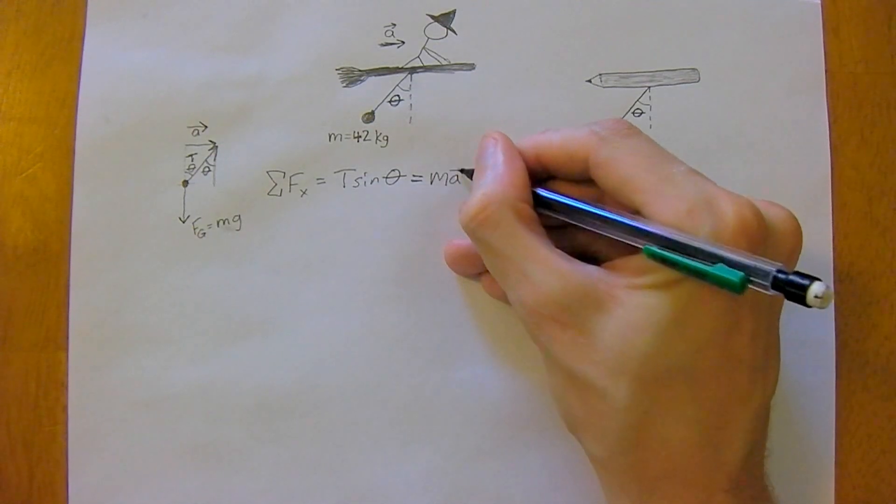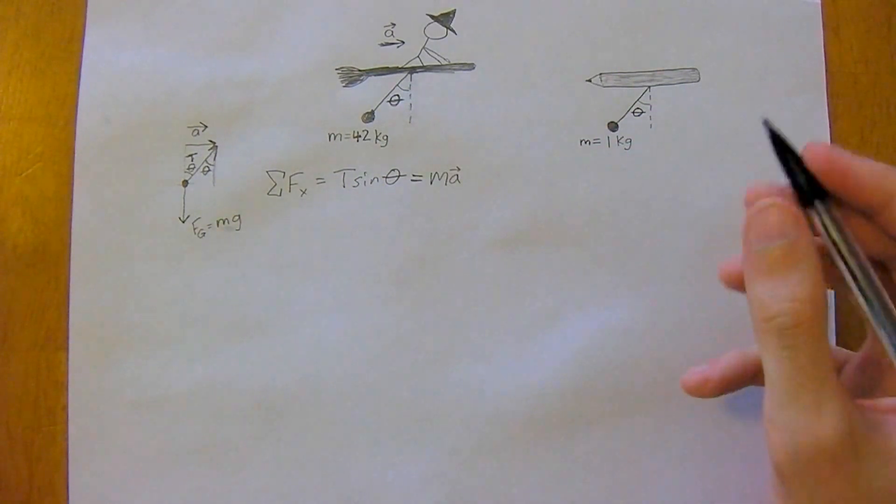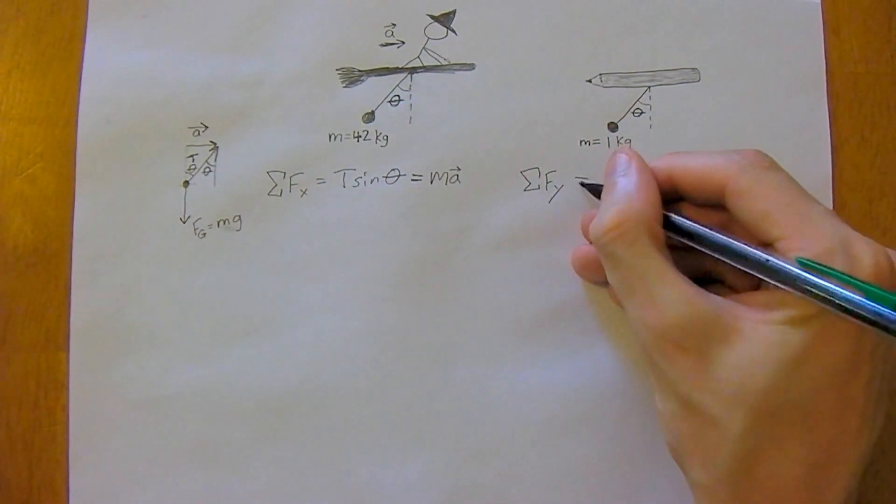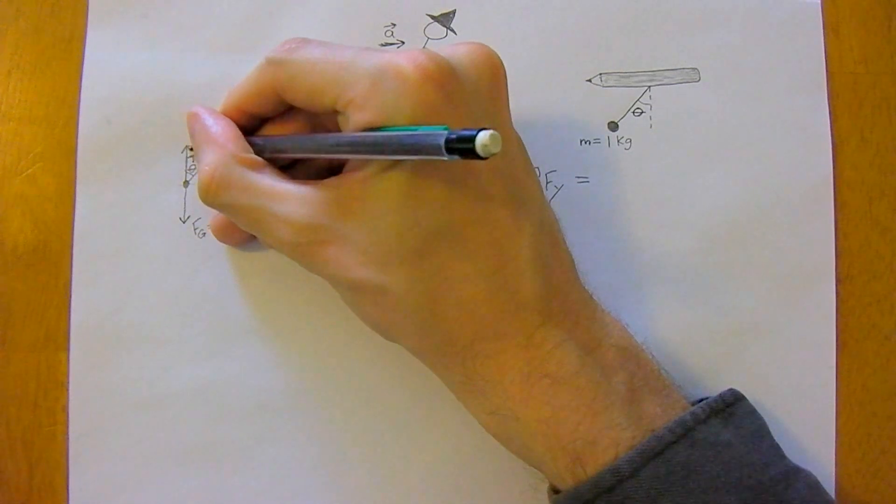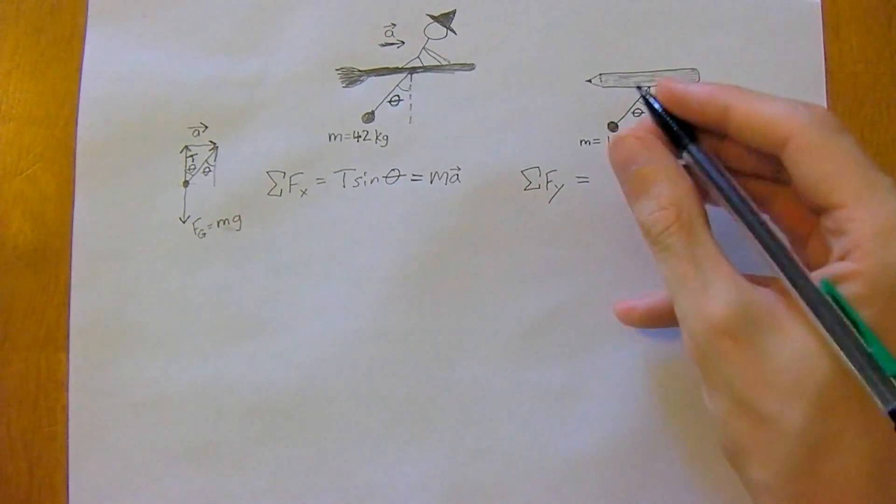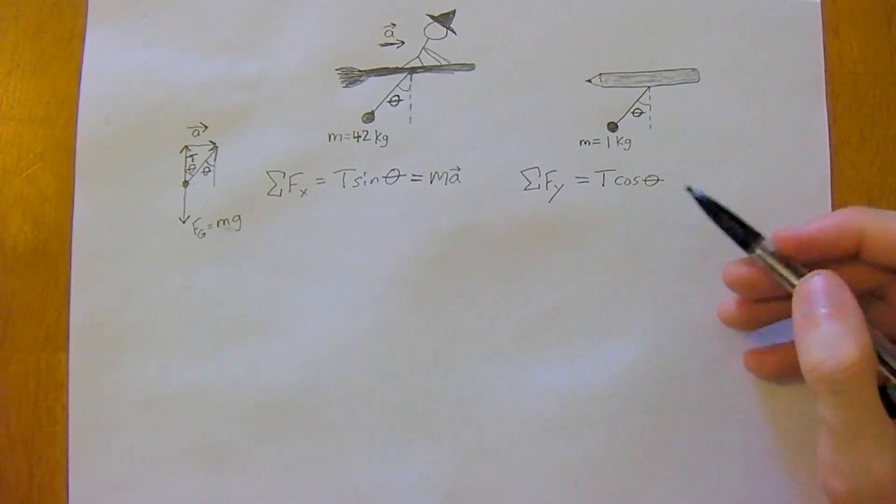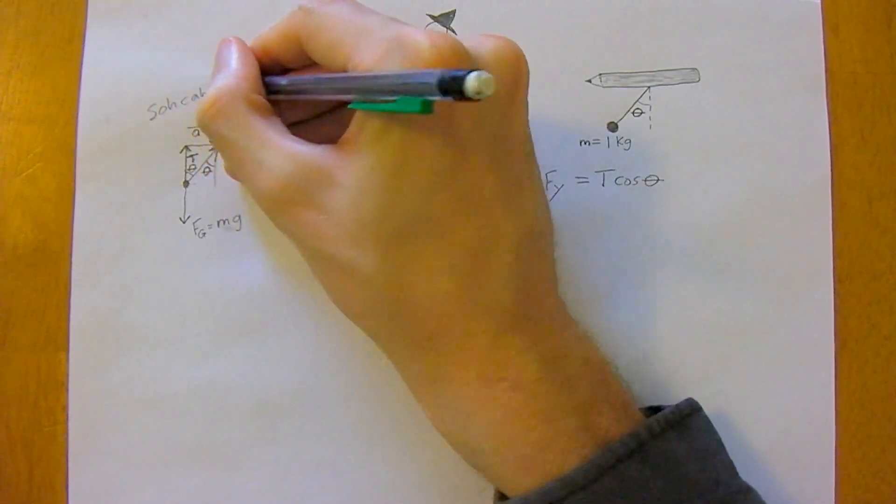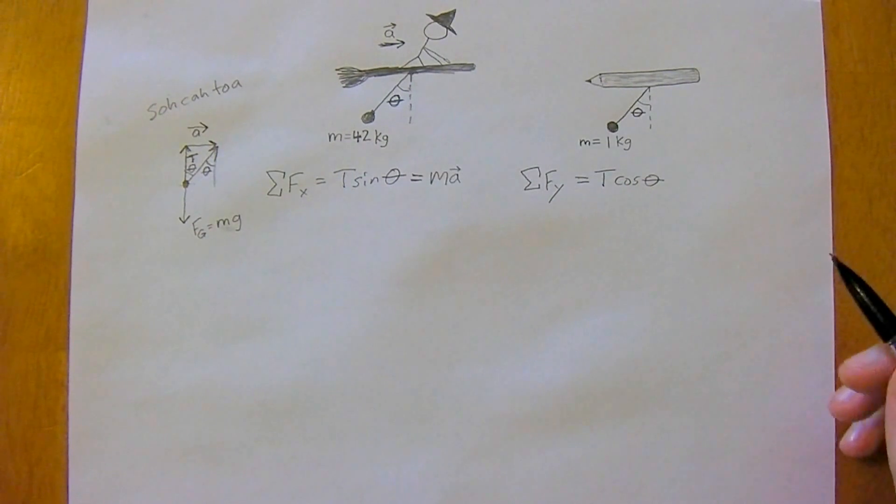Doing a similar process, we're going to take the sum of the forces in the y-direction. We have this component of tension in the y-direction which is the adjacent, so we're going to use cosine—the hypotenuse times cosine theta. Hopefully you remember, I'm just using SOHCAHTOA. There's a million videos on this.